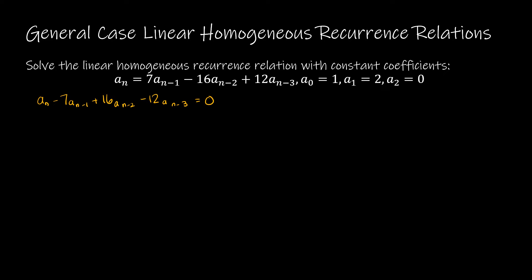I know that this is a third-order relation, so the characteristic polynomial is going to be R³ − 7R² + 16R − 12. Now I have four terms, and this is where things get tricky — I can't factor as easily as before, and I can't use the quadratic formula because this is a cubic equation, not a quadratic. So the question is: how do I factor a polynomial with four terms?